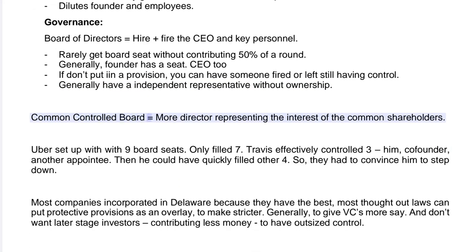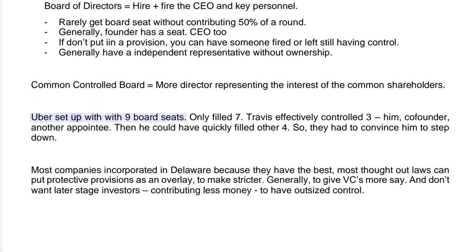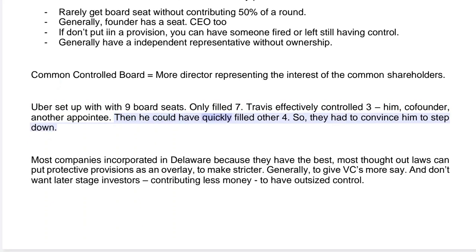A common control board has more directors representing the interests of common shareholders. Uber, for example, was set up with nine board seats but only filled seven. Travis Kalanick effectively controlled three — himself, a co-founder, and another appointee — and could have quickly filled the other four. This is why the board had to convince him to step down rather than vote him out.